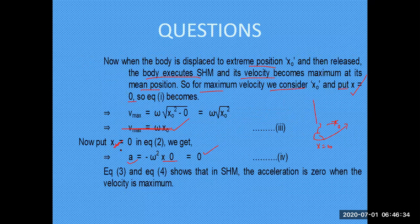So this proves that during oscillatory motion there are two key points: one where acceleration is maximum and velocity is minimum, and one where velocity is maximum and acceleration is minimum. This was the reason, and you were supposed to explain it on the basis of mathematical formulas which we have already learned during the subject lecture. Thank you very much for your question.